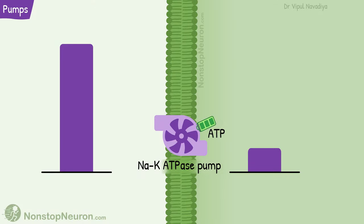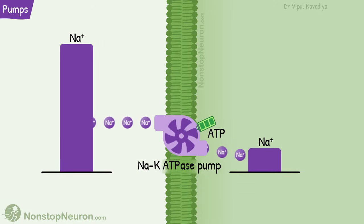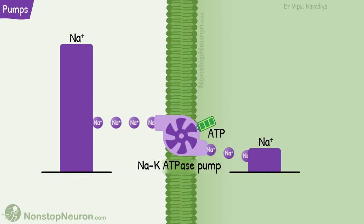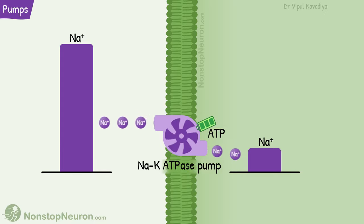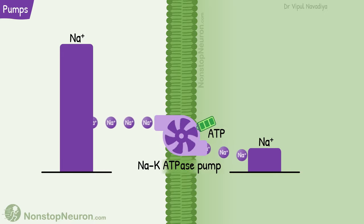For example, the sodium-potassium ATPase pump. Sodium concentration is higher outside and lower inside the cell, but these pumps move the sodium outside the cell using energy from ATP. This type of transport is called primary active transport.